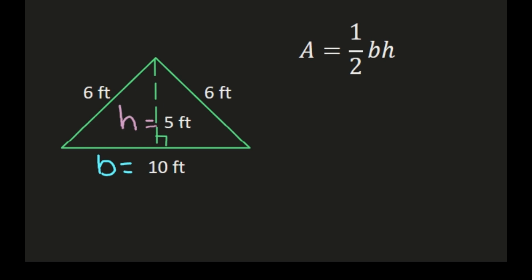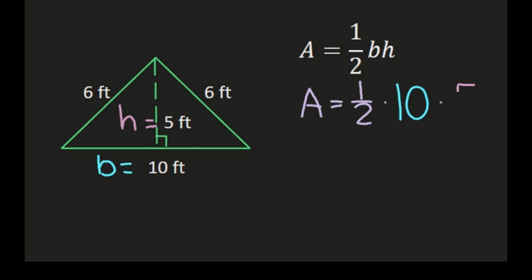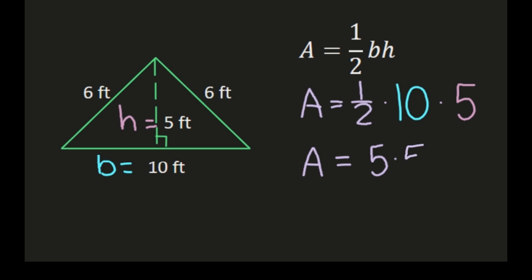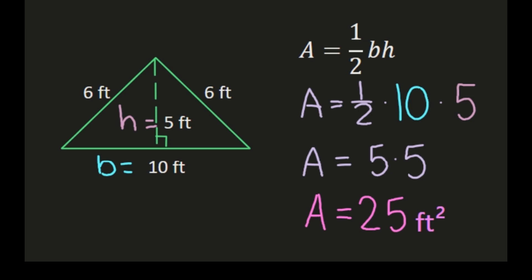I don't need to use the 6 for anything in this formula, just the base and the height. So I'm going to have area equals one-half times the base — substituting 10 for B — times the height, substituting 5 for H. Now I have area equals one-half times 10 times 5. Working left to right, one-half times 10 is 10 divided by 2, which is 5. Then 5 times 5 is 25. Because it's area, we label it as feet squared. So area equals 25 feet squared.